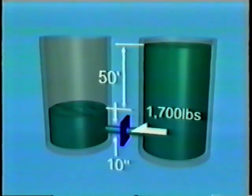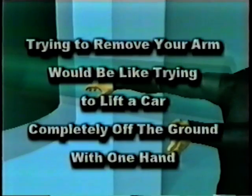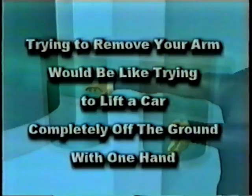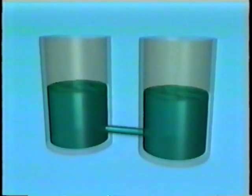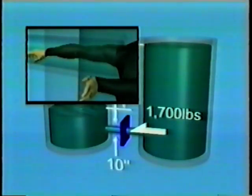If the difference between the depth of water is 50 feet and the diameter of the pipe is 10 inches, the force of water exerted on the valve is nearly 1,700 pounds. If the valve was suddenly opened and your arm was near it, it would be sucked into the hole instantly. Trying to remove your arm would be like trying to lift a car completely off the ground with one hand. You could only remove your arm if the pressures between the two bodies became nearly equalized, but at this pressure your body makes a perfect seal, stopping equalization.